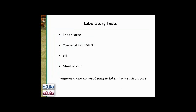For research data and BIN projects there are also laboratory tests: a mechanical shear force test measuring tenderness, chemical fat IMF percent measured in the laboratory, pH measured in the laboratory, and meat colour. To get those measurements requires a meat sample to be taken from each carcass the day after it's slaughtered.